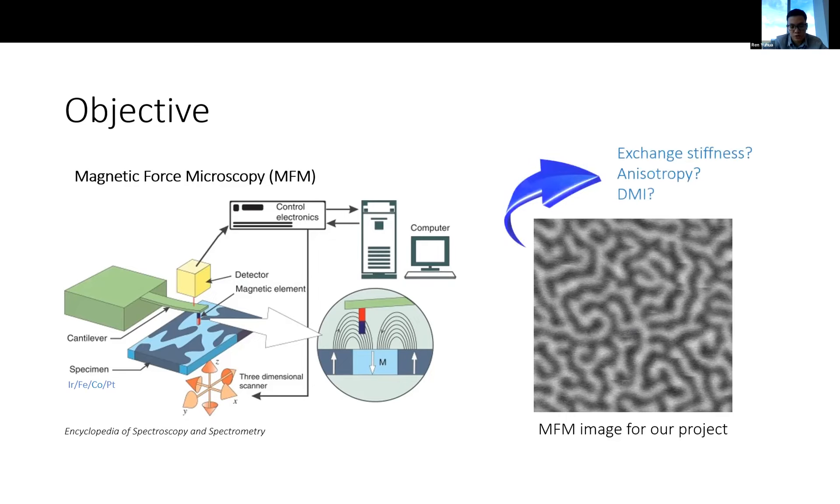A natural question to ask is what other information is available from this image? Are we able to say something about the exchange stiffness, the anisotropy, or the Dzyaloshinskii-Moriya interaction strength? To some extent, we know that the relative strength of these interactions determine the type of magnetic textures that we see. This is what happens essentially when we do micromagnetic simulations. Now we try to do the reverse.